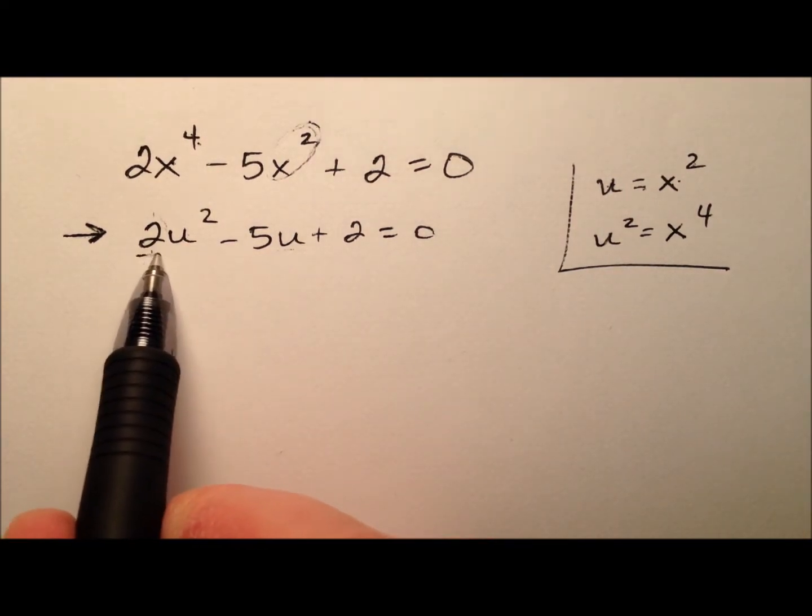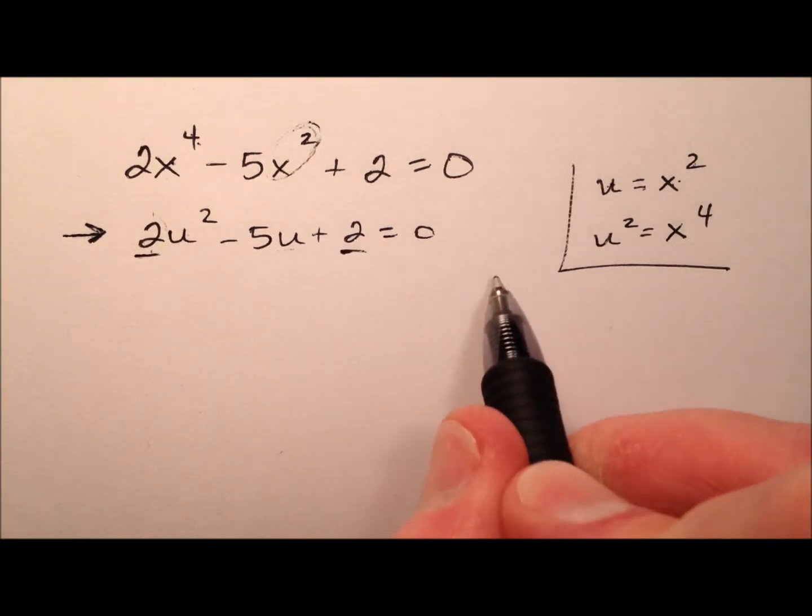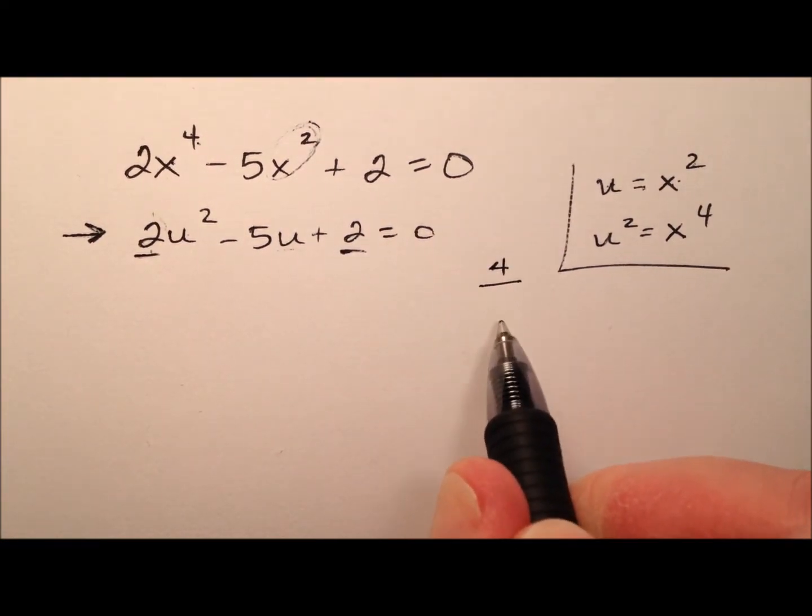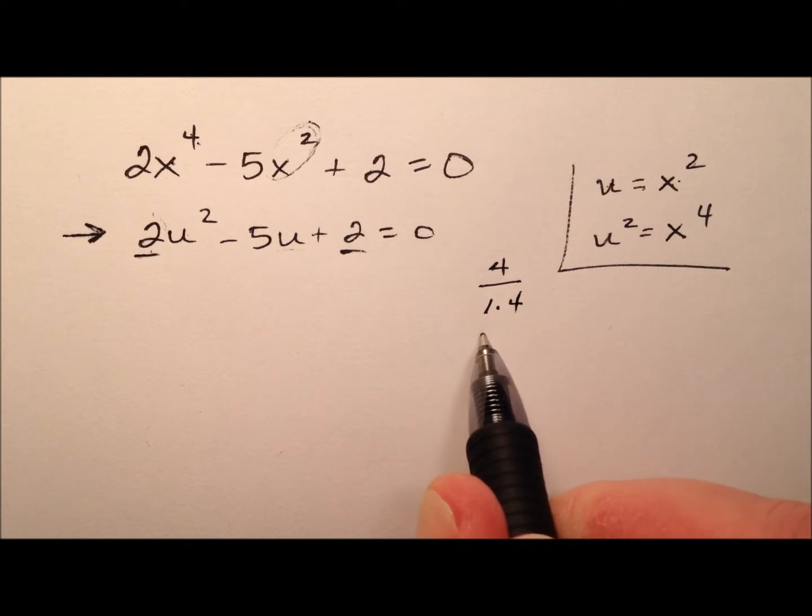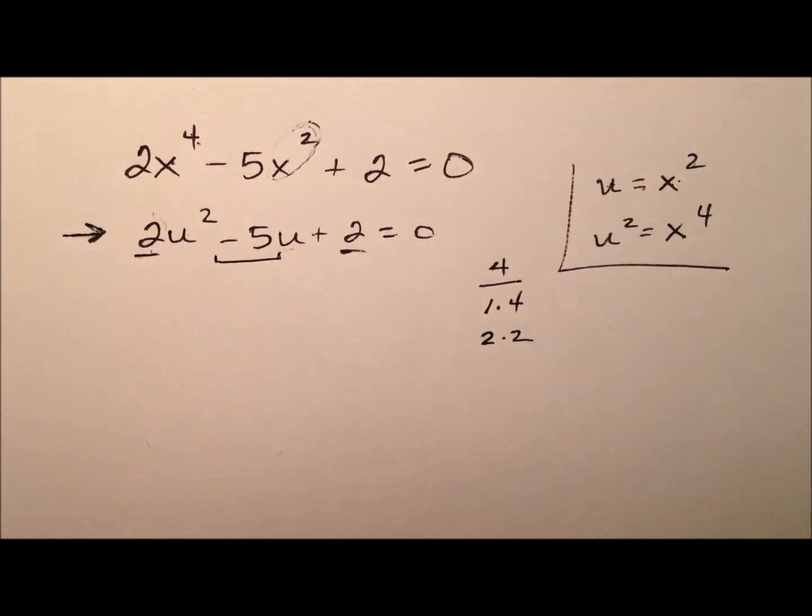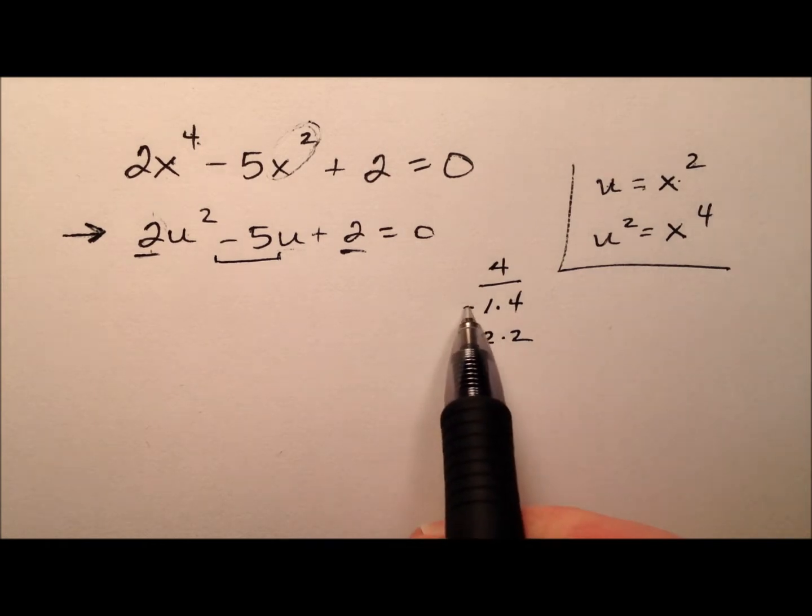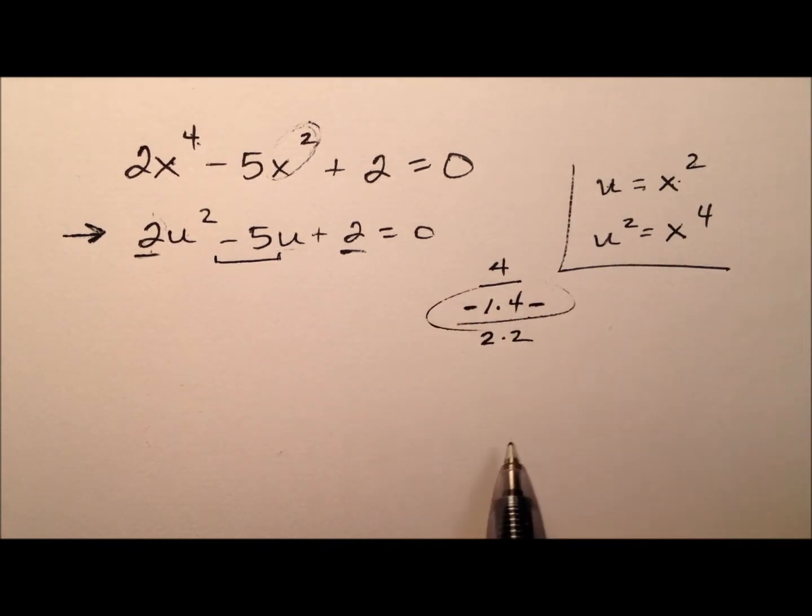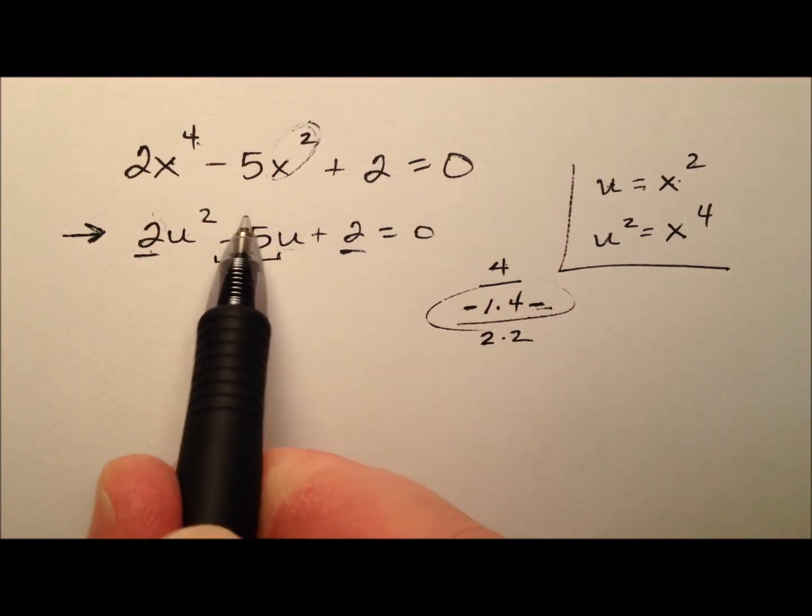For now, we're going to take the 2 and multiply it by the 2 to make 4. Factors of 4 are 1 times 4 and 2 times 2. But they need to add to make a negative 5. We'll be using negative 1 and negative 4 because they multiply to make a positive 4 and add to make this negative 5.